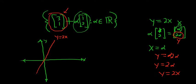Let's pick nice values of alpha. Let's say alpha equals 1. So if alpha equals 1, what do we get? We get (3,1) plus (1,2). So that's going to be (4,3).